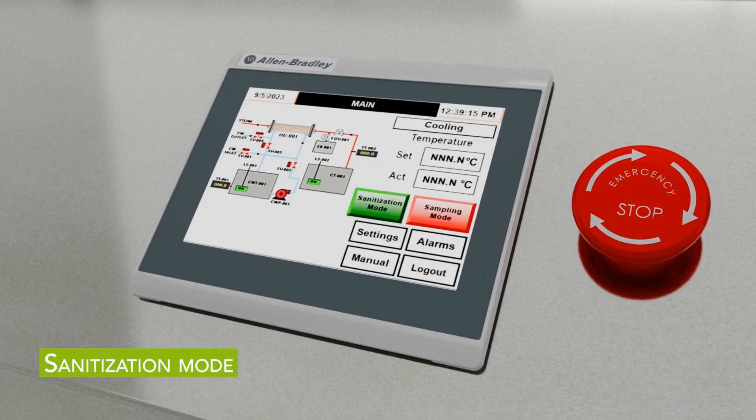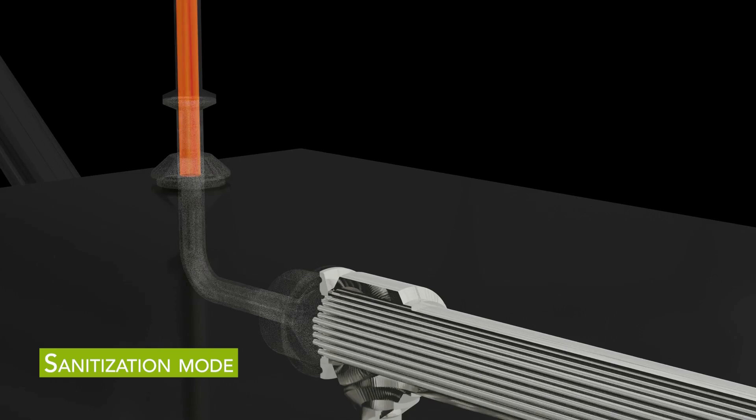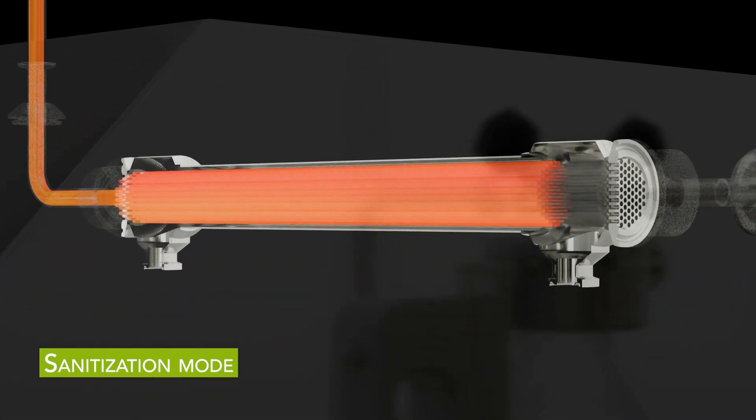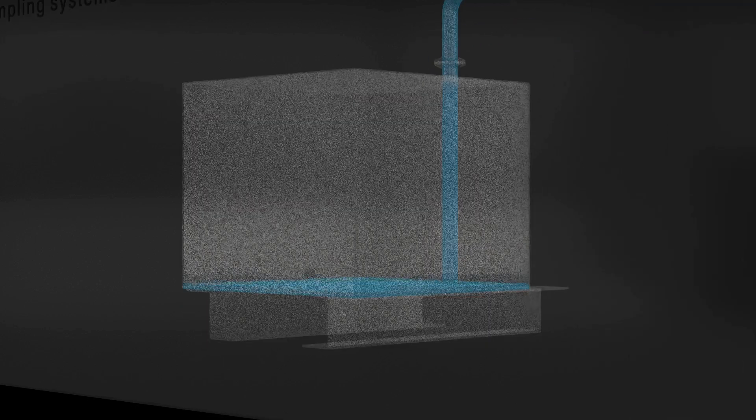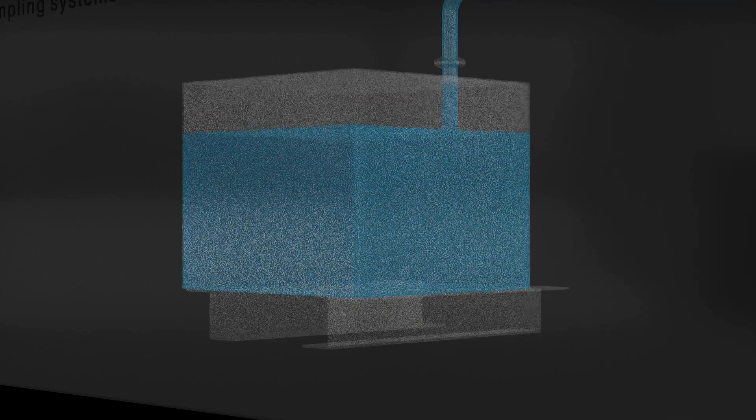During sanitization mode, clean steam is passed through the heat exchanger and sample valve, sanitizing the system prior to sampling. Any steam condensate is safely collected in the onboard waste tank.